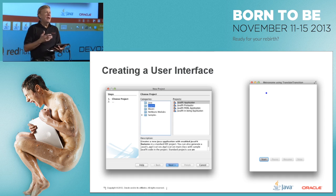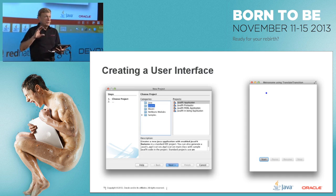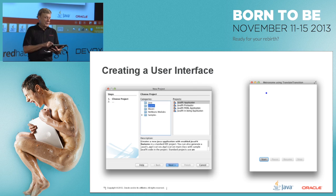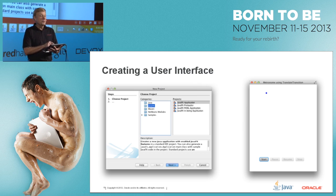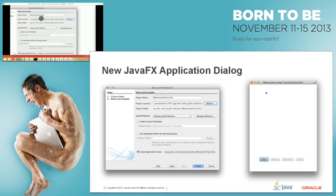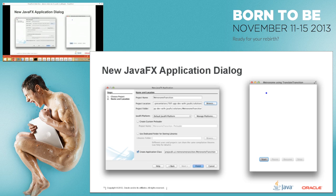I'd like to go through quickly how you would create a user interface in JavaFX programmatically. You can also use Scene Builder, which is a drag-and-drop environment. First I'll show how to do it programmatically using NetBeans. In NetBeans, you select a JavaFX application under New Project, give it a name — we'll call ours 'metronome transition.' What we're building is a metronome application demonstrating animation principles: a ball bounces back and forth every second, and buttons change state — from disabled to enabled — while the animation pauses, resumes, or stops.